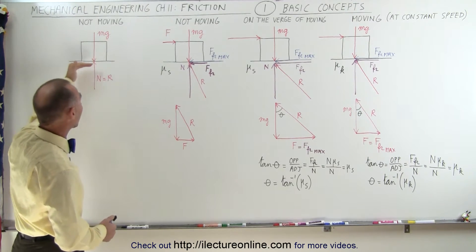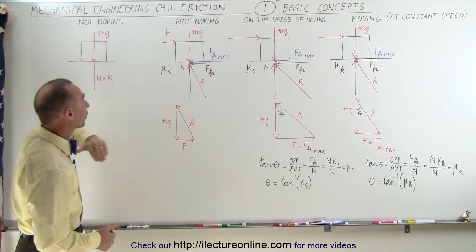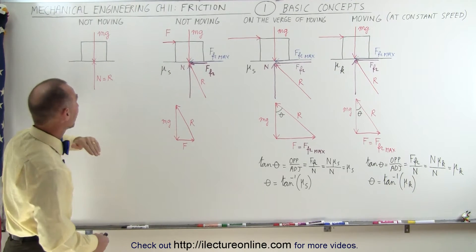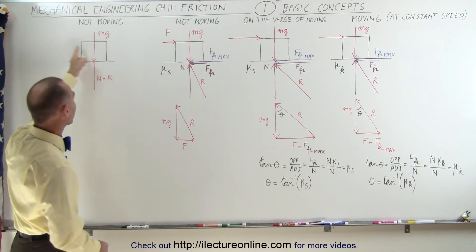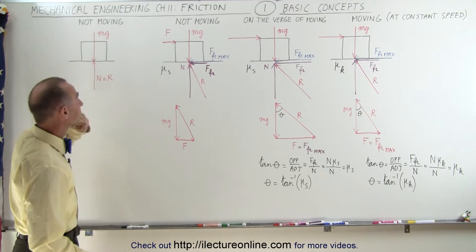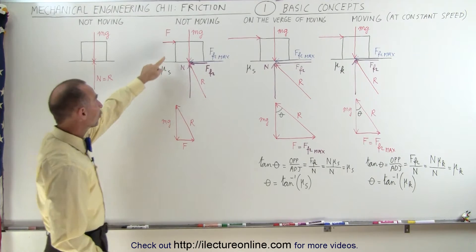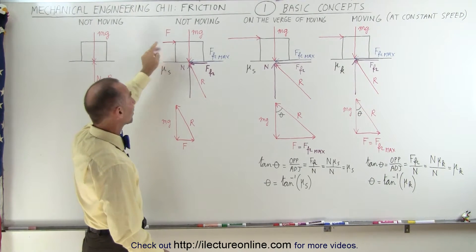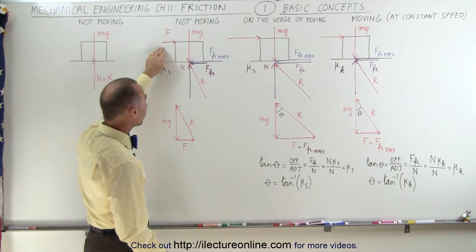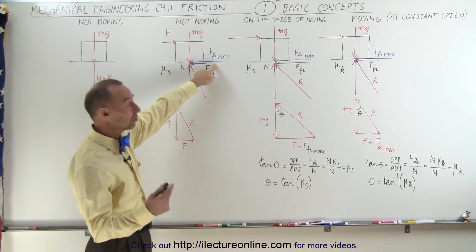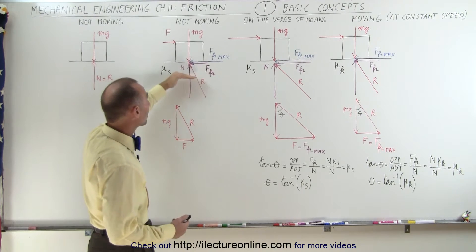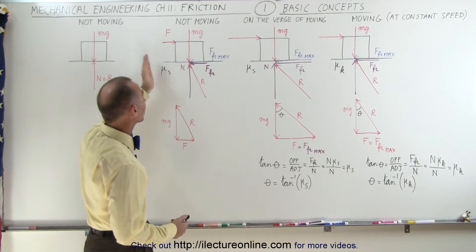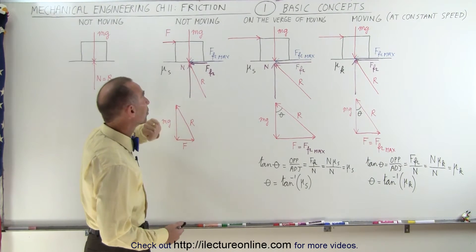We have a block sitting on a horizontal surface in all four cases. In the first case, there's no horizontal force acting on the block. In the second, there's a horizontal force acting on the block, but it's not sufficient to overcome the friction force between the surface and the block, and therefore it's not moving.